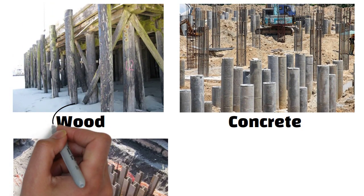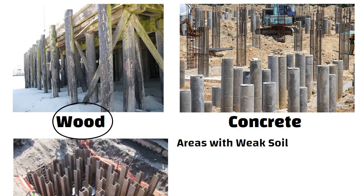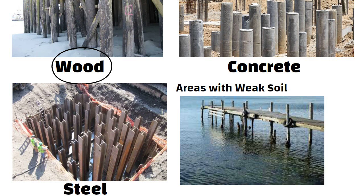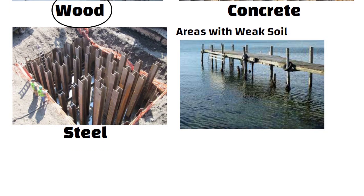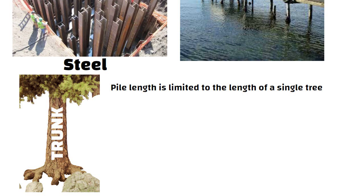In traditional construction, wooden piles were used to support buildings in areas with weak soil. Wooden piles are still used to make jetties. For this, one needs trees with exceptionally straight trunks. The pile length is limited to the length of a single tree, about 20 meters, since one cannot join together two tree trunks.